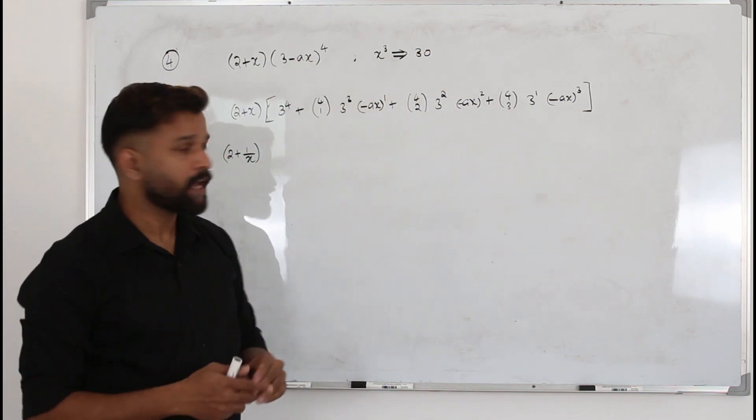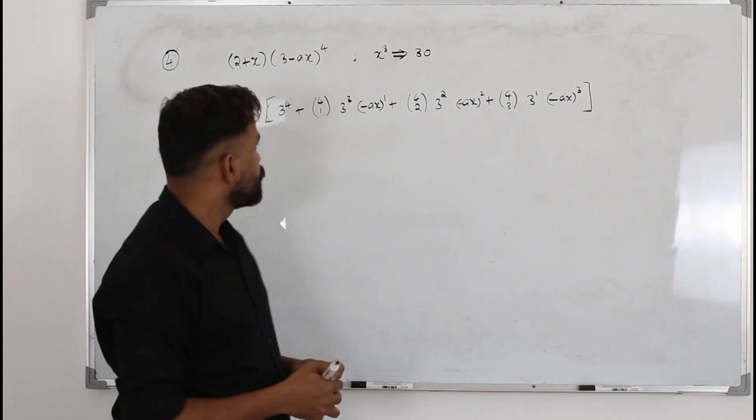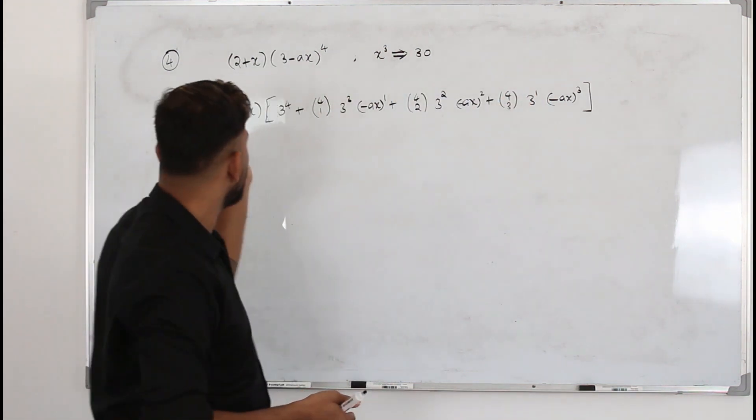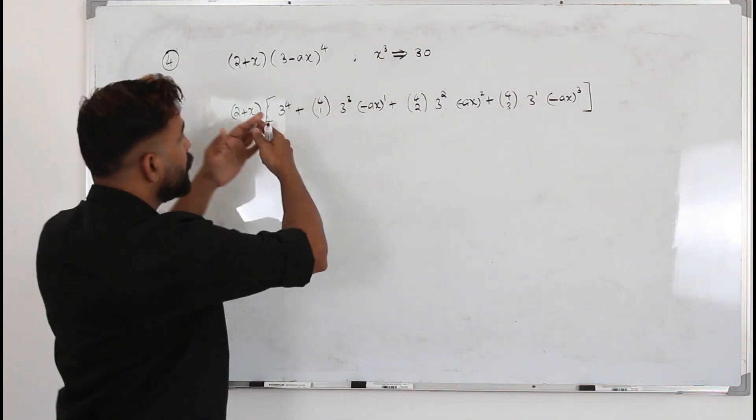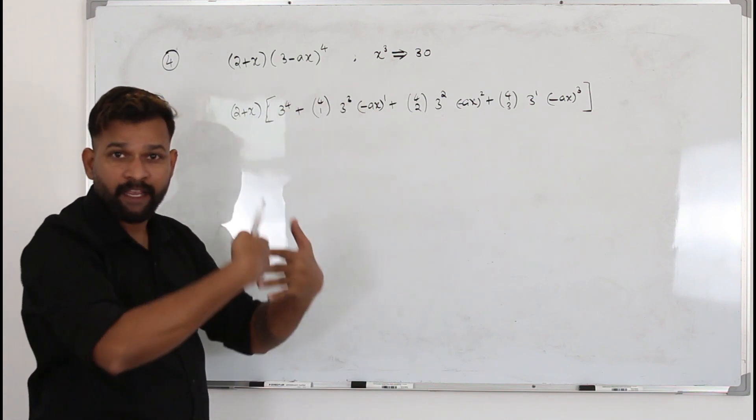In this case, you won't have x⁵. Next step, we need to simplify this and open the bracket. Multiply everything and then take coefficient of x³.